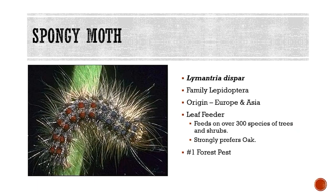A spongy moth, which was formerly known as gypsy moth, is a moth that's native to Europe and Asia. It's in the family Lepidoptera, which includes butterflies and moths. And it is a very voracious leaf feeder. The caterpillar will feed on over 300 species of trees and shrubs, but it does have a strong preference for oak. And because of the wide variety of species that it will feed on, it's commonly considered to be the number one forest pest in the United States.